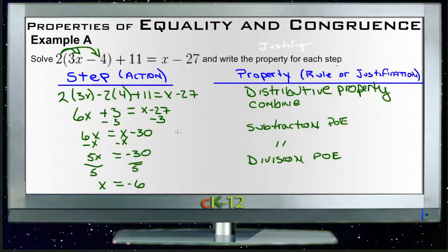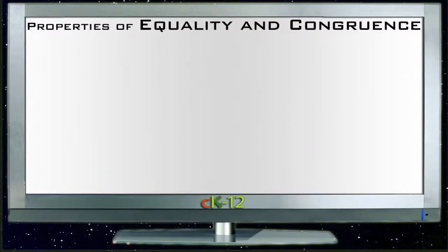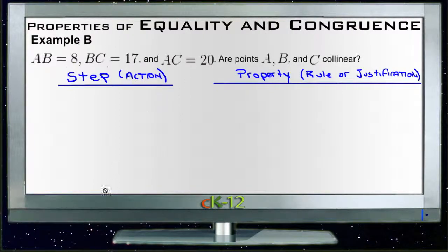And that's it. So the same set of rules you would have done in Algebra 1, just write down what property tells you it's okay to do that for each step. Let's take a look at Example B. Example B says AB = 8, BC = 17, and AC = 20.